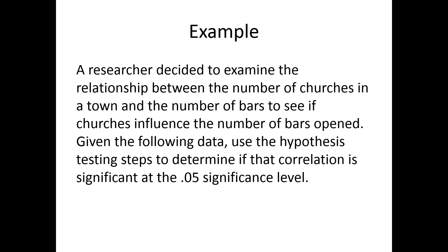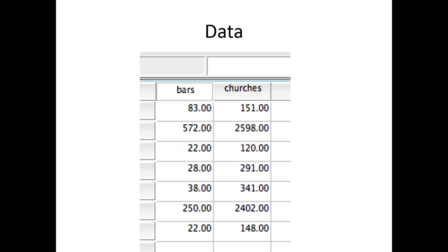Given the following data, is the correlation significant at 0.05? That's what we're going to use for our criterion on this test. If you want to enter this data yourself, remember that each person gets their own row. In this case, each city gets its own row. We've got our two big cities here, St. Louis and Kansas City, and then some of our other smaller cities. We're looking at if bars and churches are related to each other.